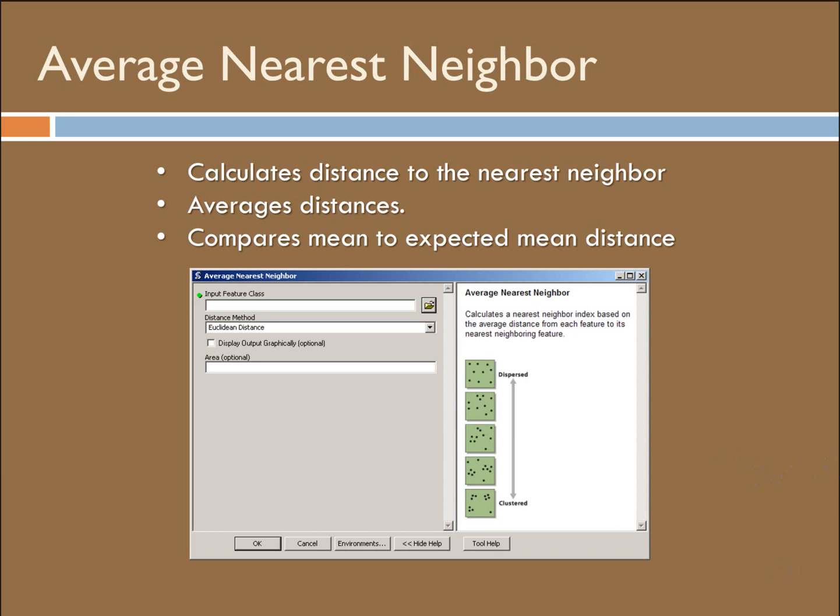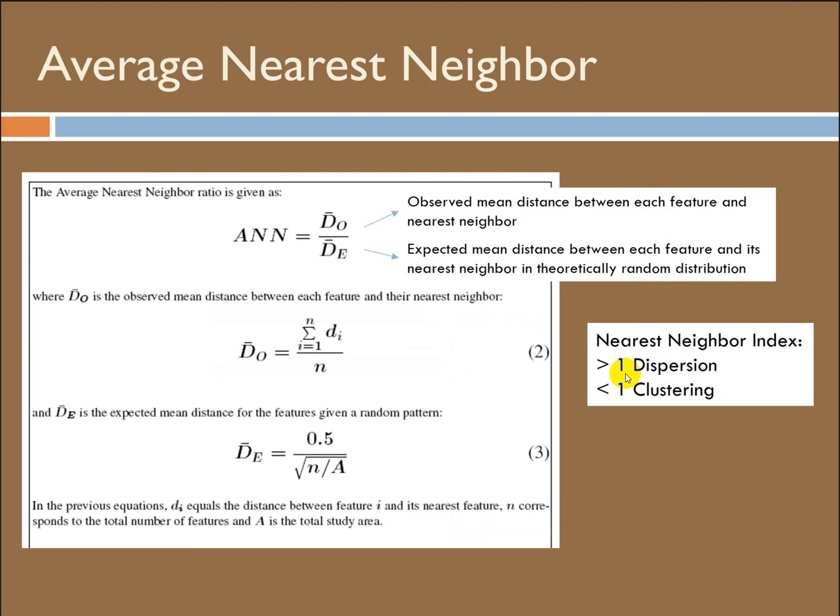So this is what it looks like. The average nearest neighbor tool, this is the index. It's the observed mean distance between each feature and its nearest neighbor over the expected mean distance for the theoretically randomized distribution of the same number of data points. The important thing that's interesting about this is that because it's a ratio, if we have values that are greater than one, we see dispersion. So in this case, the observed mean distances are greater than what would be expected. This isn't very common to get a number over one. But a number less than one, if our observed distances are smaller, think of that squat distribution that we saw. That's what's going to indicate clustering of our data set.